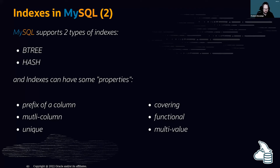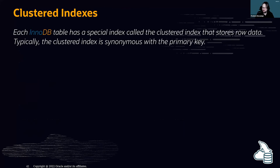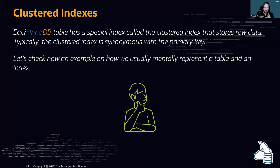The most important index in InnoDB — the default and ACID-compliant storage engine of MySQL — is the clustered index. Each InnoDB table has a special clustered index that stores the raw data. The clustered index is typically synonymous with the primary key.